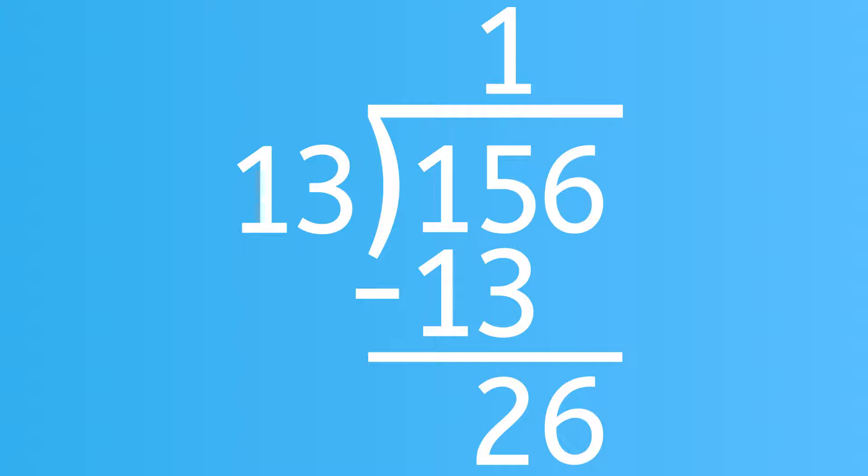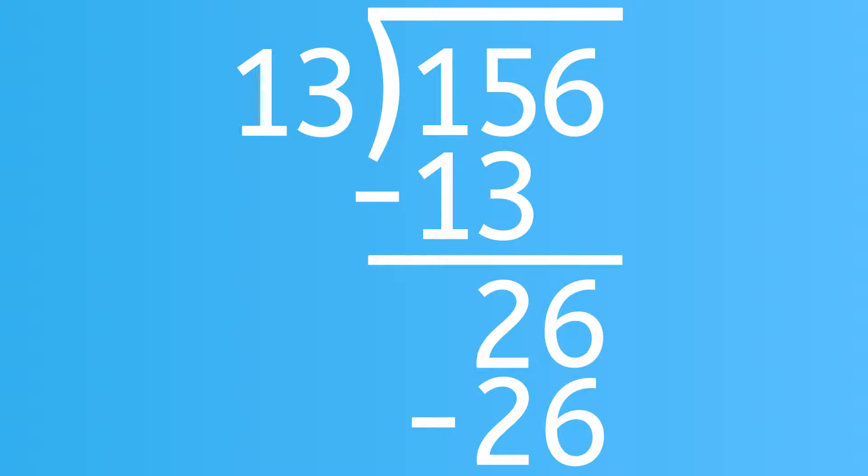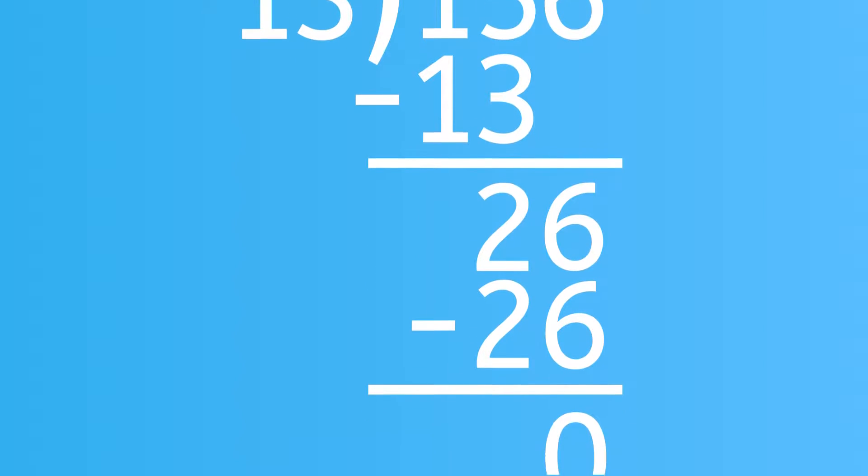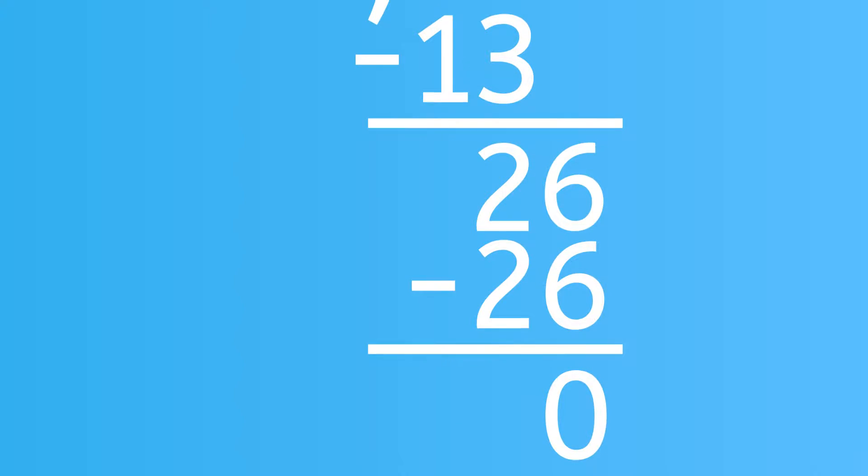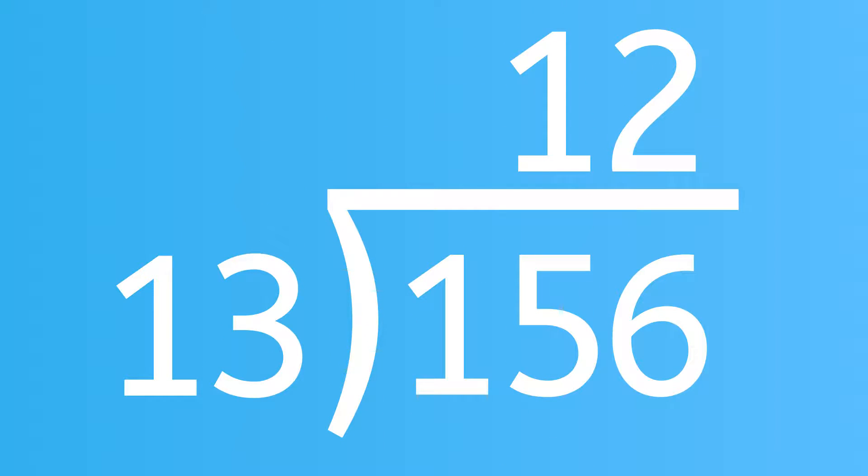How many times can 13 go into 26? Did you say 2? Let's put a 2 next to the 1 on top of the long division symbol. 2 times 13 is 26. 26 minus 26 is 0. So we've solved 156 divided by 13. The answer is 12.